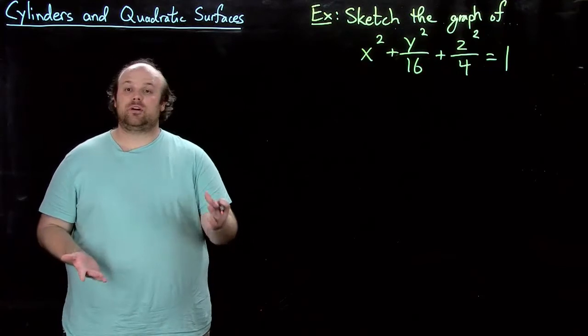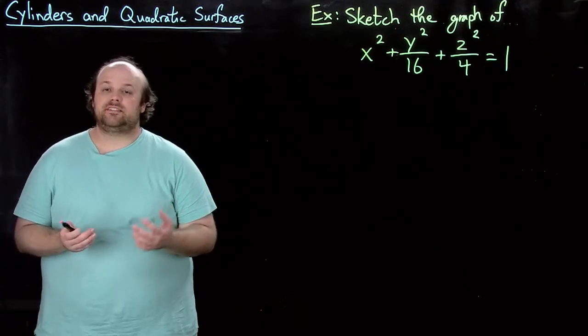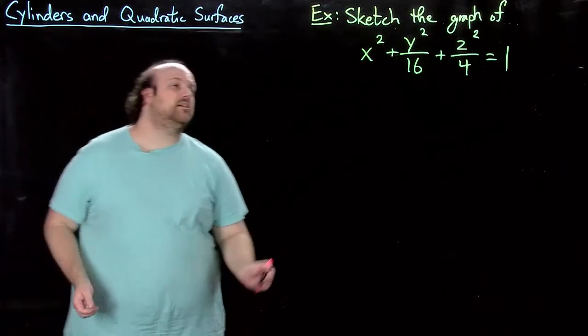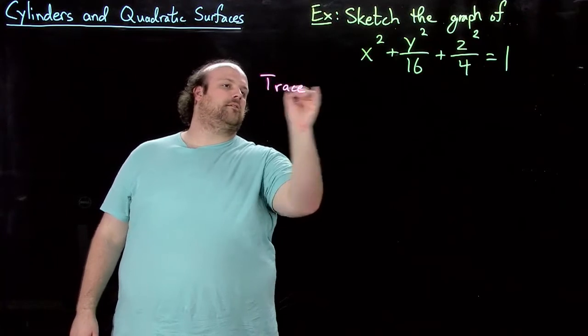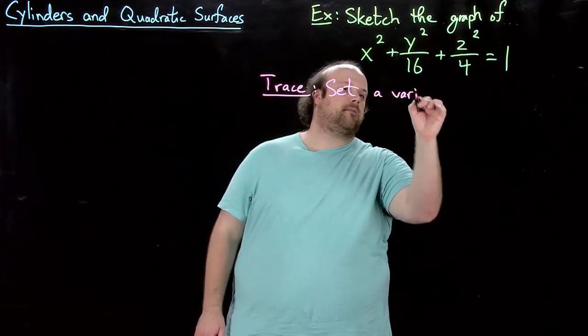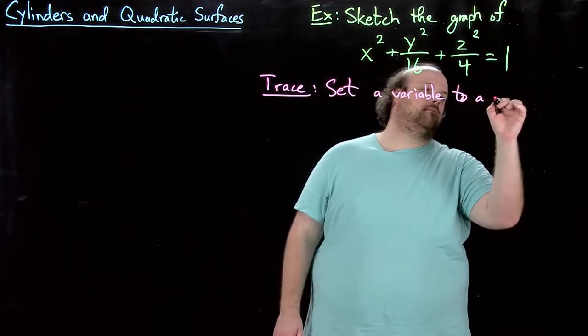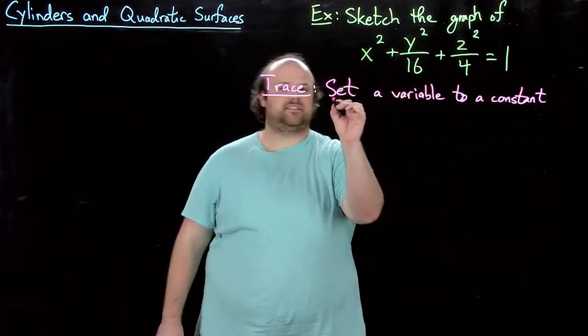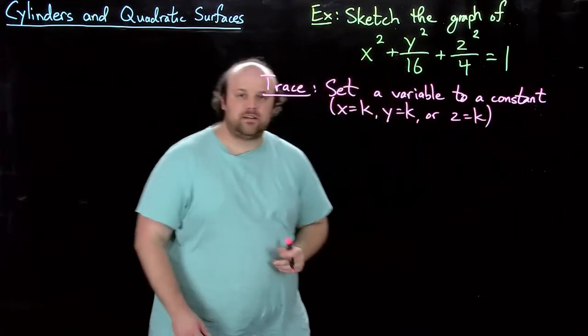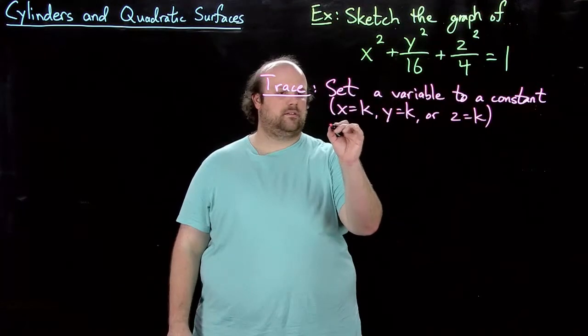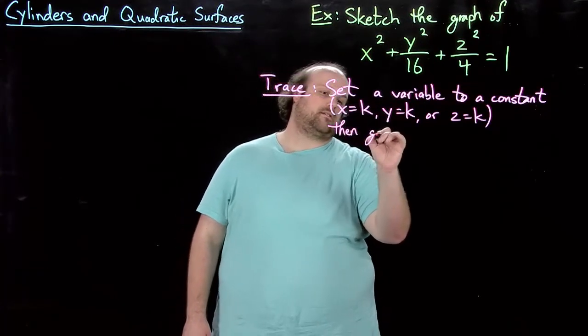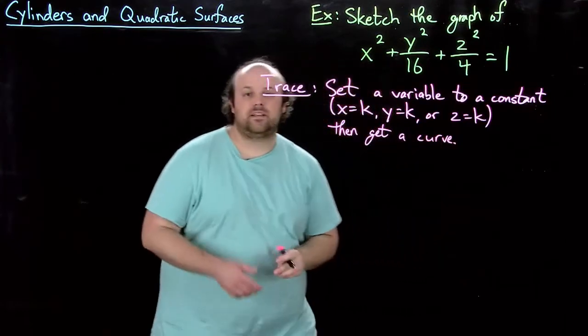So now let's do an example of graphing a quadratic surface by hand. And one of the easiest ways to do that is using something called traces. So let's talk a little bit about what traces are and use them to graph this. So what a trace is, is we set a variable to a constant. So for example, this is something like x equals k, y equals k, or z equals k. And then we get a curve. So we set a variable equal to a constant, then get a curve. And that curve is called a trace.